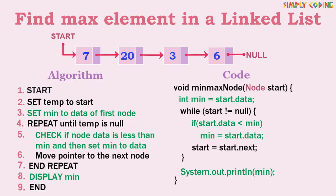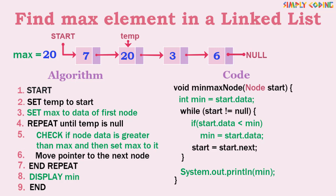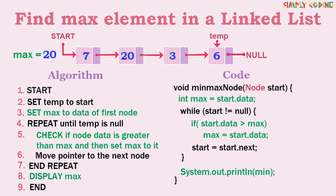A program to find the max value in a linked list is written the same way. We assume the element of the first node is the max, then check all elements and if any element is greater than that it is taken as max. In code, we set max as the data of the first node. Inside the loop we check if any node data is greater than max — if yes, that data is set as max. Once out of the loop, we print max.